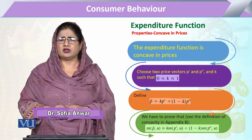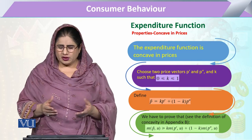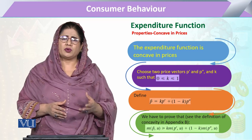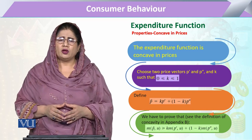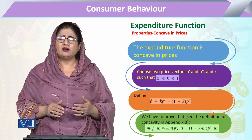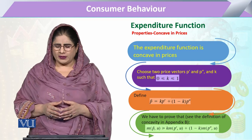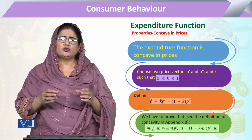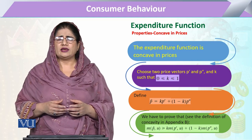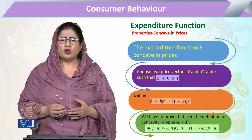In our expenditure function, if we have to deal with two commodities X, and in this example if we say there are two commodities — one we can call X prime and the other X double prime — then their respective prices will be P prime and P double prime. Now these two prices that the consumer is facing: the consumer has to switch or substitute between them.